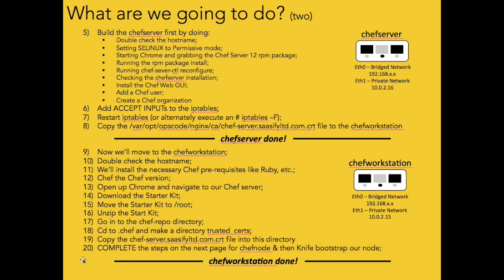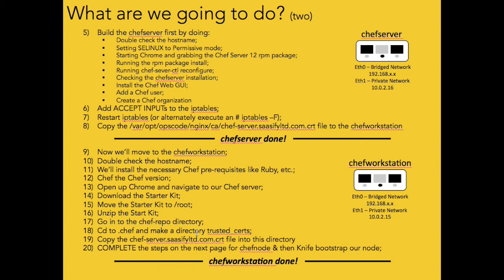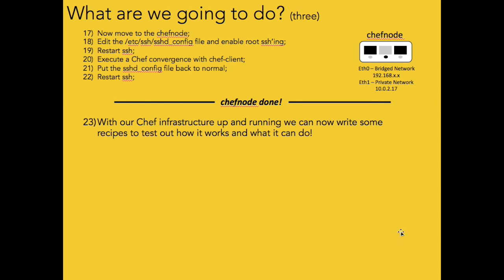Then we're going to jump into the Chef workstation, which is going to link up with the Chef server and download what they call the starter kit. Once we've got the starter kit, we can unzip it and get our Chef repo up. The way it works is you write your recipes on the workstation, push them to the server, and the server pushes them out to many nodes. Finally, the last step is to get a Chef node up and running — we'll modify the SSHD config to allow root login remotely, which only needs to be allowed once, and then our first recipe will be putting that back to normal.